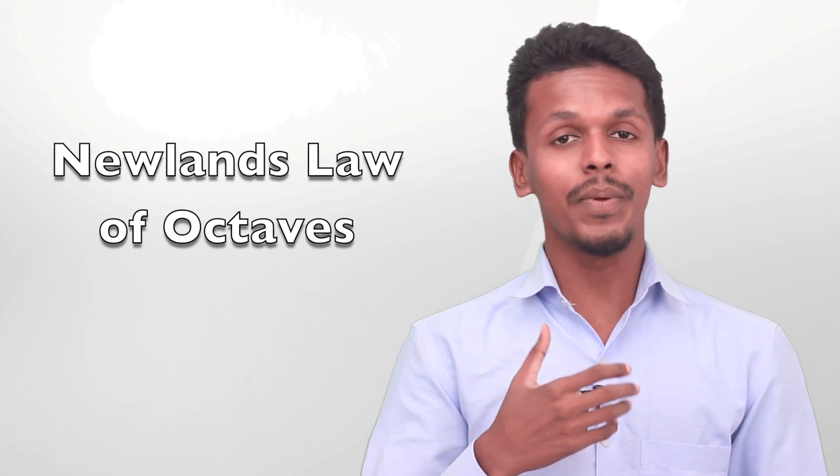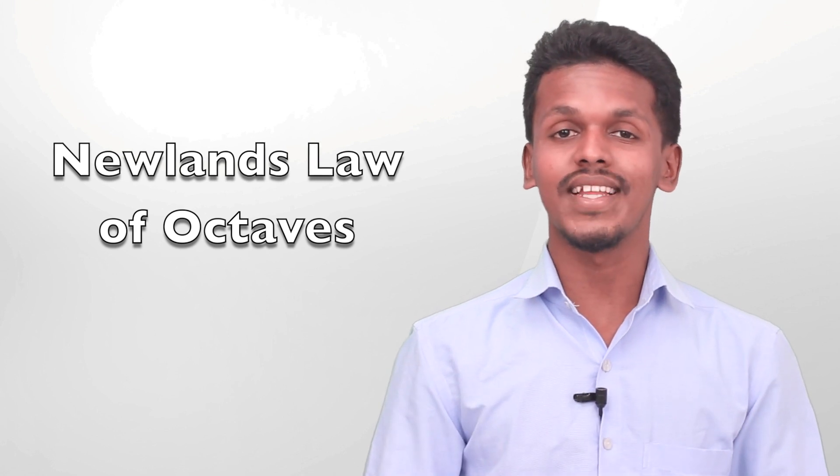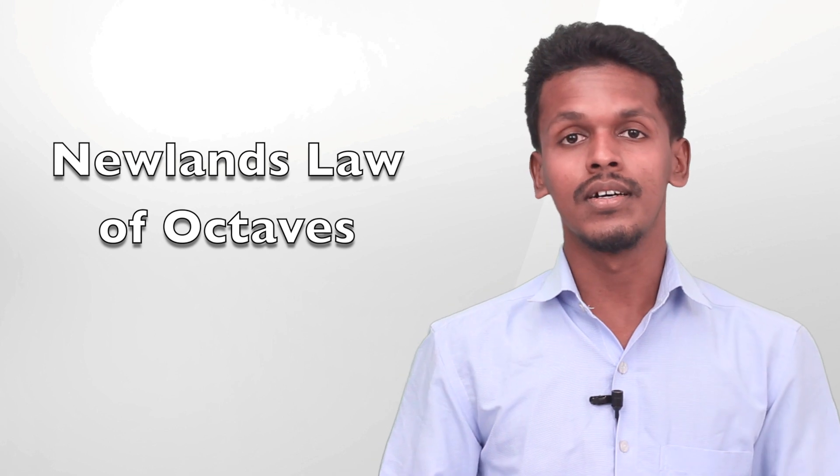Hey friends, in the last lecture we talked about Dobereiner's triads, which played a very important role in the formation of the periodic table that we observe nowadays. But let me also talk about Newland's octave, which played a very important role in arranging elements in a particular horizontal row.